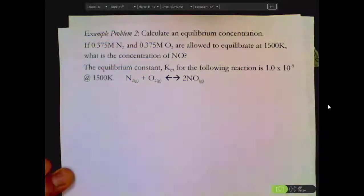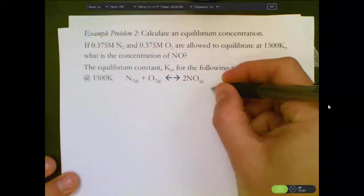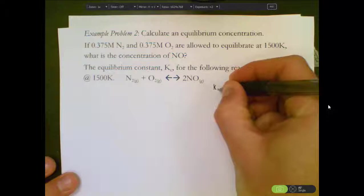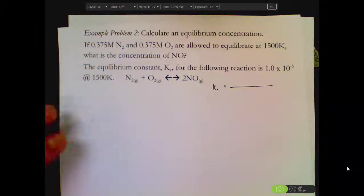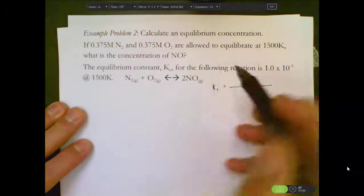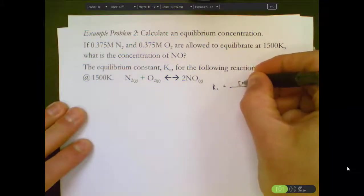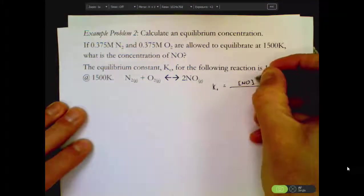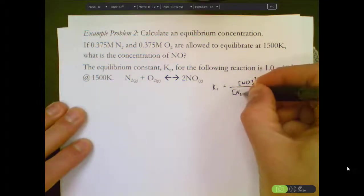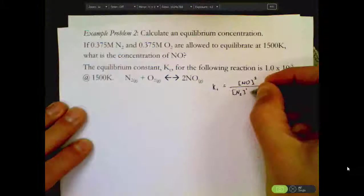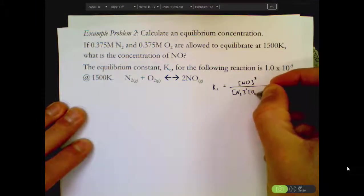Every time we start one of these equilibrium problems, start with an expression. So Kc is going to be equal to the products over the reactants. Our product happens to be the NO. Since there's the coefficient 2, it gets squared. The reactants are N2 to the first and O2 to the first.